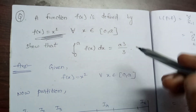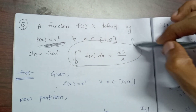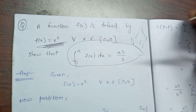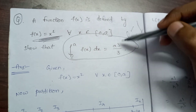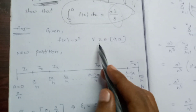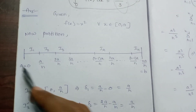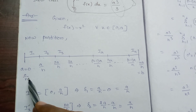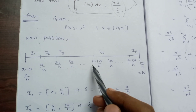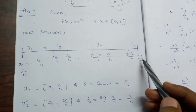We partition the interval [0, a]. So a equals 0 at the start. The partition points are: 0, a/n, 2a/n, 3a/n, ..., (r−1)a/n, ra/n, ..., (n−1)a/n, and na/n. Here na/n equals a, so the n cancels.